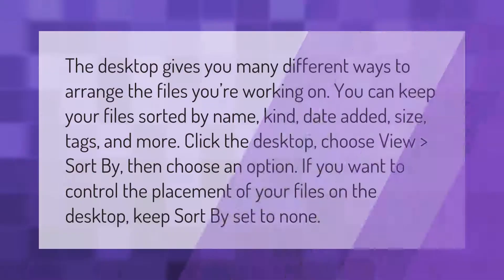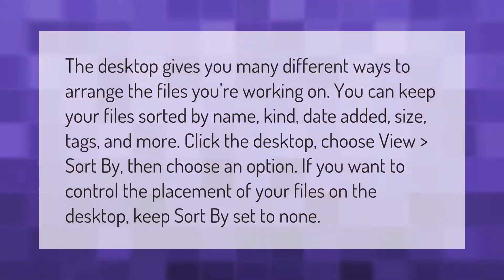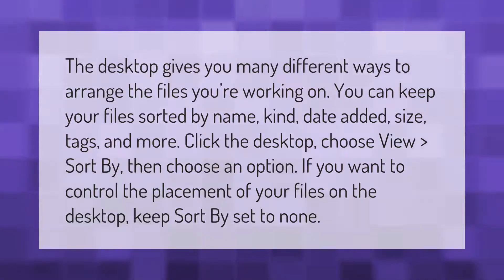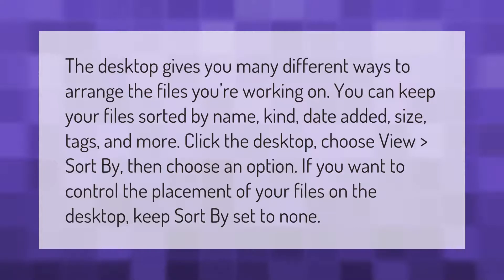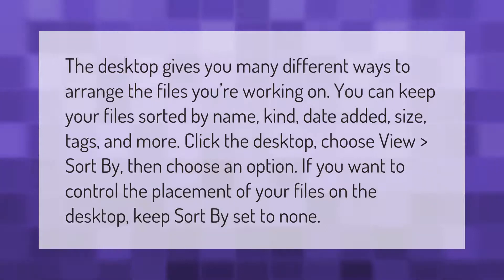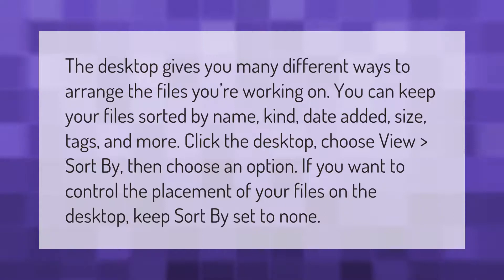The desktop gives you many different ways to arrange the files you're working on. You can keep your files sorted by name, kind, date added, size, tags, and more. Click the desktop, choose View > Sort By, then choose an option.